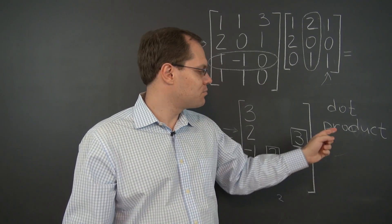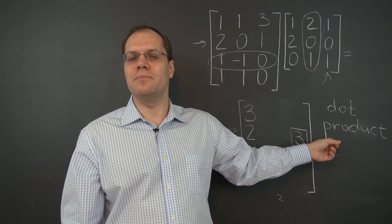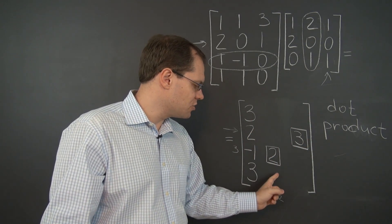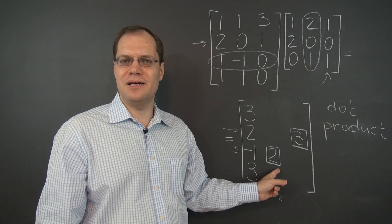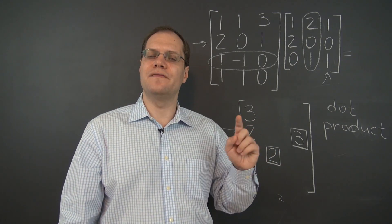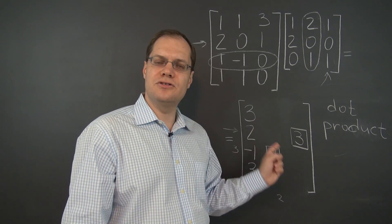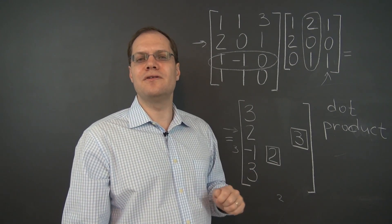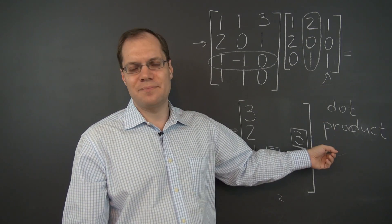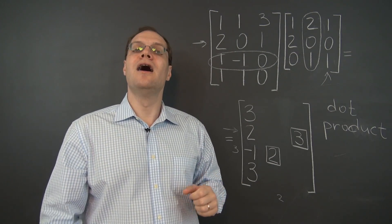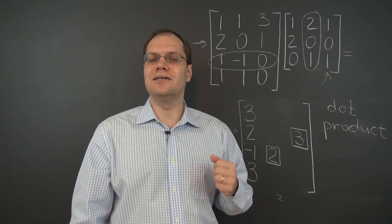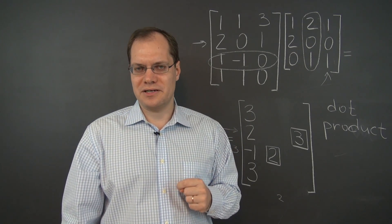That's the dot product perspective on matrix multiplication. The takeaway is that you can determine the entries of the resulting matrix one at a time. That's the advantage of the dot product perspective — if you only need to determine one or two or several entries in the resulting matrix, you should definitely use the dot product approach. Otherwise, you'll be doing a lot of extraneous work you don't actually need to do.